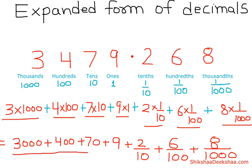Which can be written as 3000 plus 400 plus 70 plus 9 plus 2/10 plus 6/100 plus 8/1000.